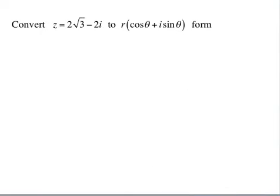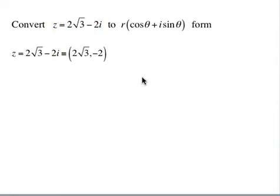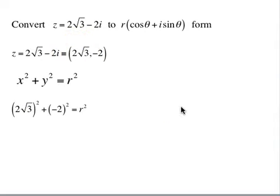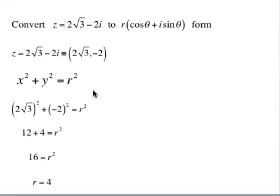The last question is to convert z = 2√3 - 2i to r·(cos θ + i·sin θ) form. Here x = 2√3 and y = -2. We need to find r: x²+y² = r², so (2√3)²+(-2)² = r². That's 4·3 + 4 = 12 + 4 = 16 = r², giving r = 4. That is the modulus of the complex number.